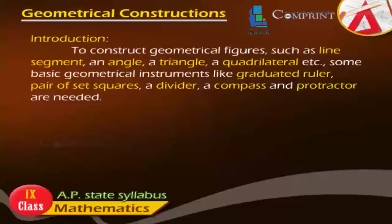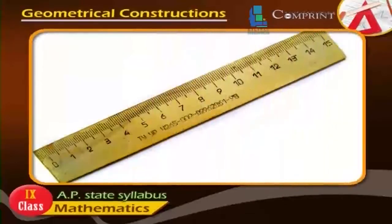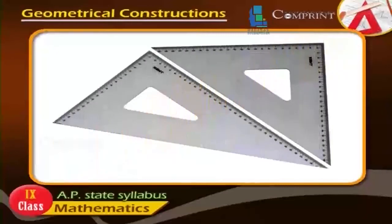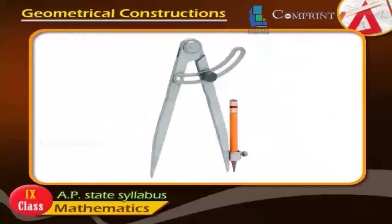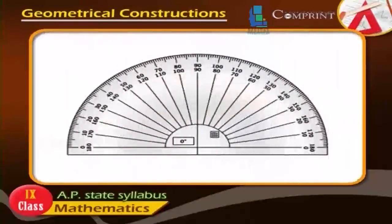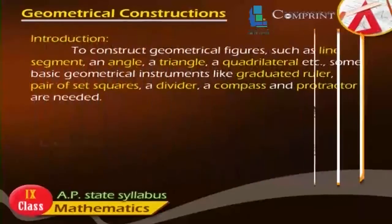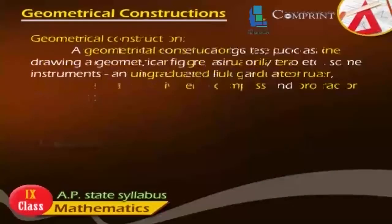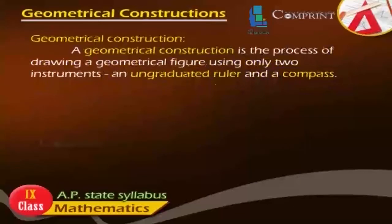Some basic geometrical instruments are needed, like a graduated ruler, a pair of set-squares, a divider, a compass, and a protractor. A geometrical construction is the process of drawing a geometrical figure using only two instruments: an ungraduated ruler and a compass.